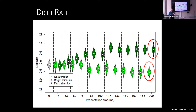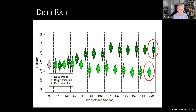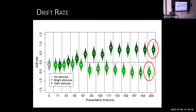An audience member asked: if you believe the model, the drift rate should be completely constant — so the apparent change with presentation length reflects the fact that the model doesn't account for a non-decision time when the stimulus is too short. The speaker confirmed this: the model treats it as a non-decision time, and it doesn't have a component for what happens when there's nothing to decide about. The speaker asks us to keep this in mind, as it becomes relevant when looking at the bias conditions.